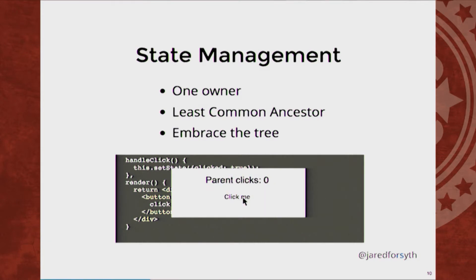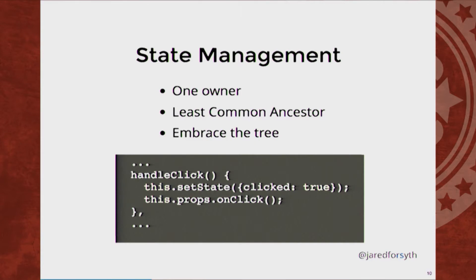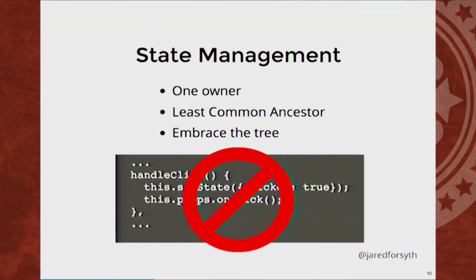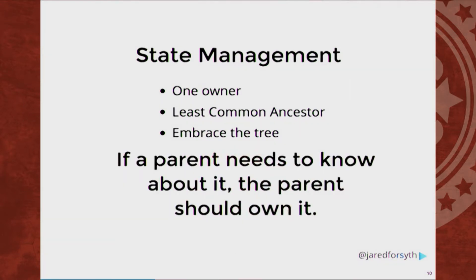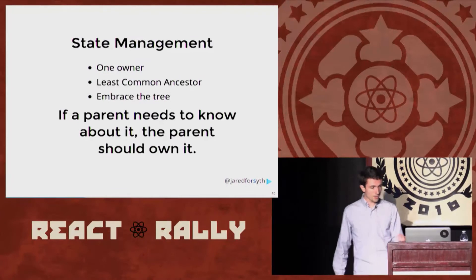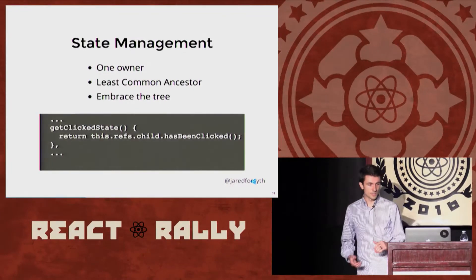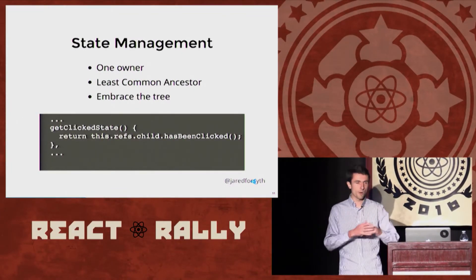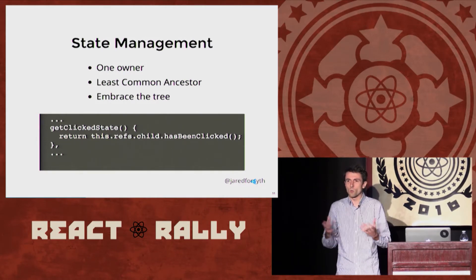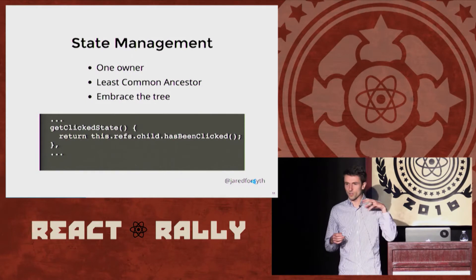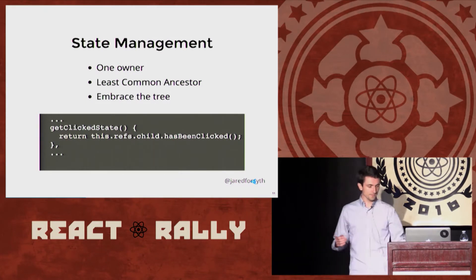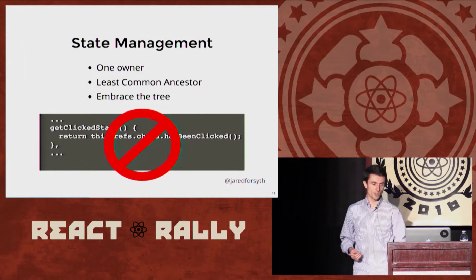If the parent wants to know something about what's happening to the child component, we know how to do that — you pass in a callback through props, like props.onClick. This is a huge red flag. If you're setting state in a component and passing that up to a parent, chances are you're just going to have state everywhere eventually. My rule of thumb is: if a parent needs to know about it, the parent should own it and just pass it down to the child through props. Another example of this problem is using refs — if the parent needs to know about it, the parent should own it. Also a big red flag.